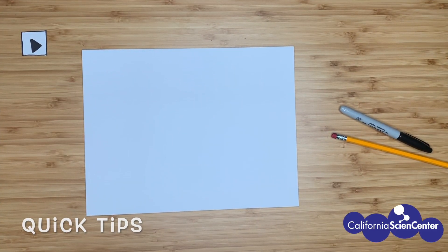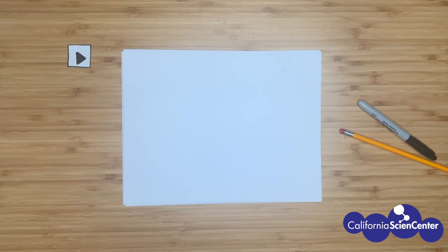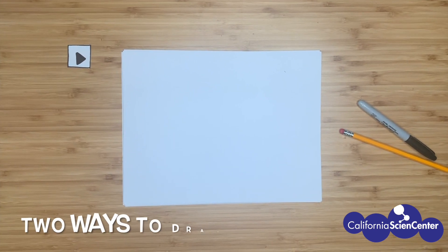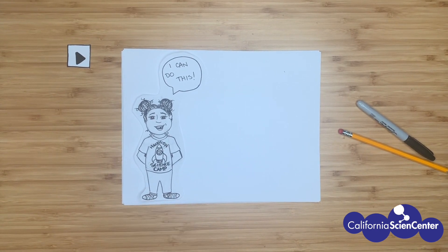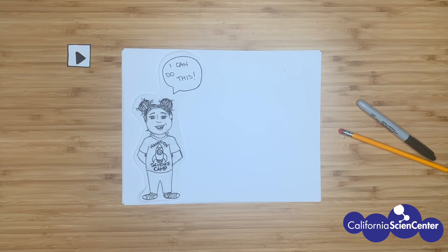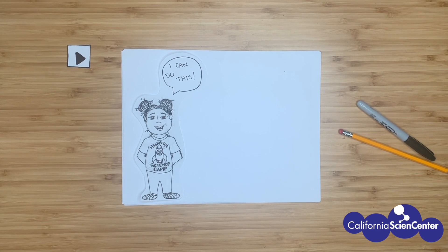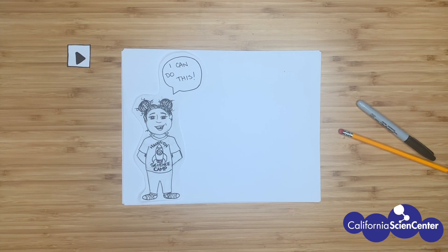Here are some quick tips before getting started. Okay scientists, there are two ways you can do this video. Your first option is to do it on your own. If you're feeling pretty confident with your drawing skills, you can watch this video and draw and make your own coloring page.